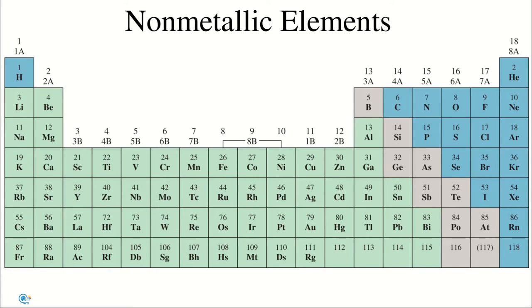The chemistry of these elements is diverse despite their relatively small number. Most of the essential elements in biological systems are non-metals: hydrogen, carbon, nitrogen, phosphorus, oxygen, sulfur, chlorine, and iodine.